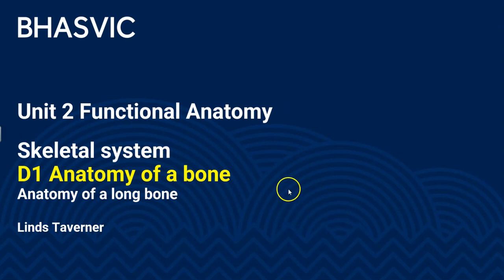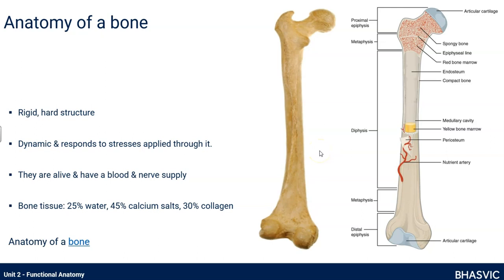We look specifically at a long bone. Hopefully you already know that whilst we start as a cartilage model, we develop tough, hardened bone, and it's our framework, the structure of our body. Key facts about the anatomy of a bone: it's a rigid, hard structure. It's dynamic, so it isn't just a static thing — it responds to stresses that we apply through it. The more exercise you do, the right kind of exercise, the more your bone tissue will respond and grow.